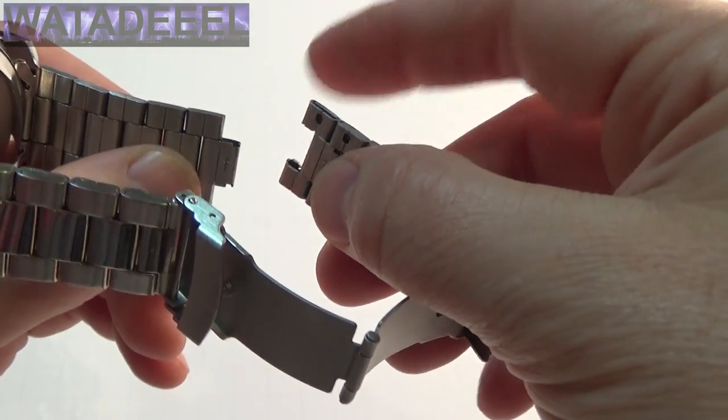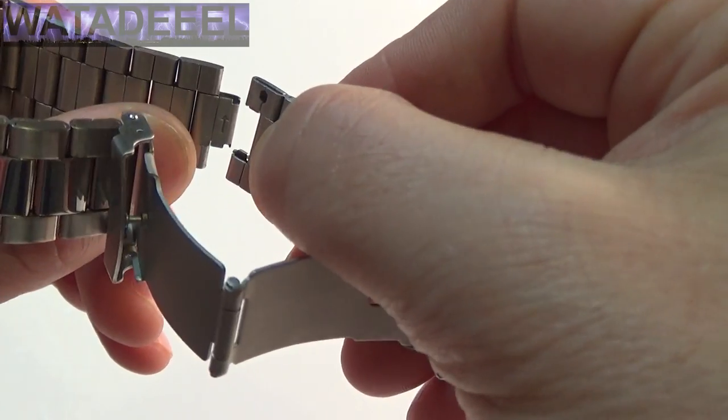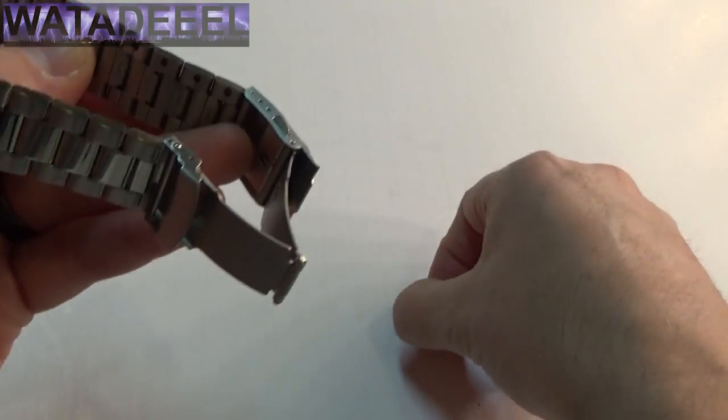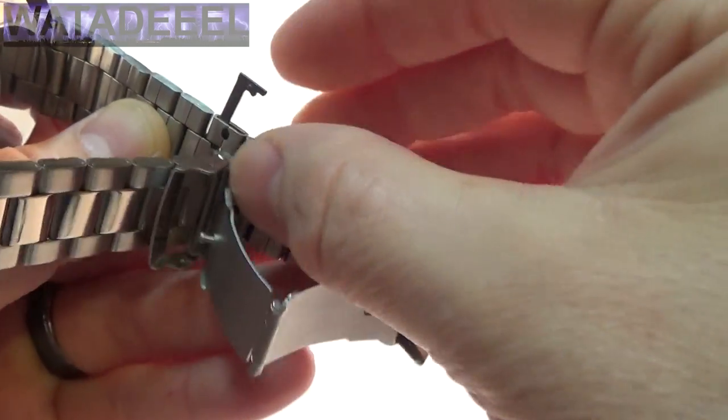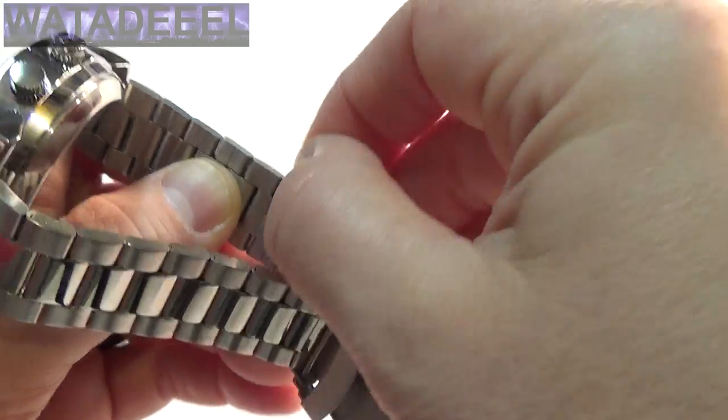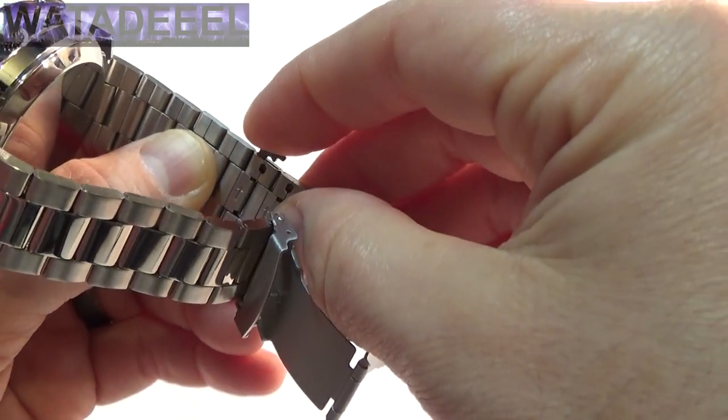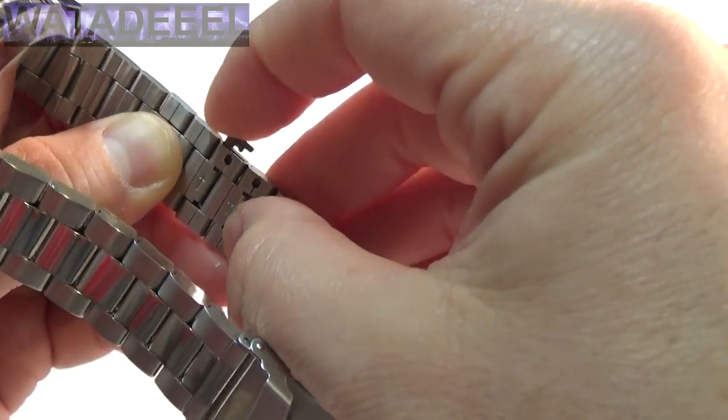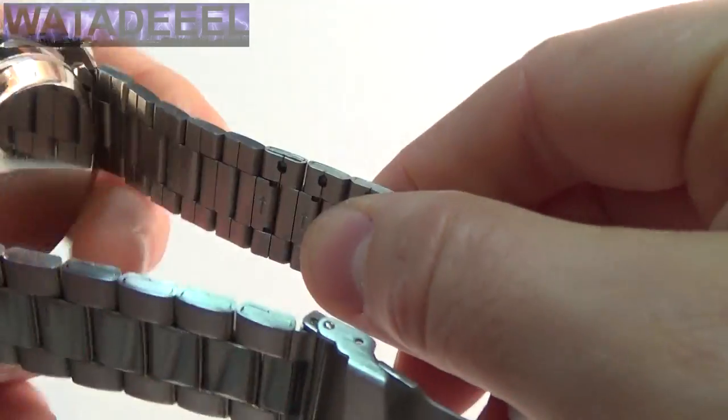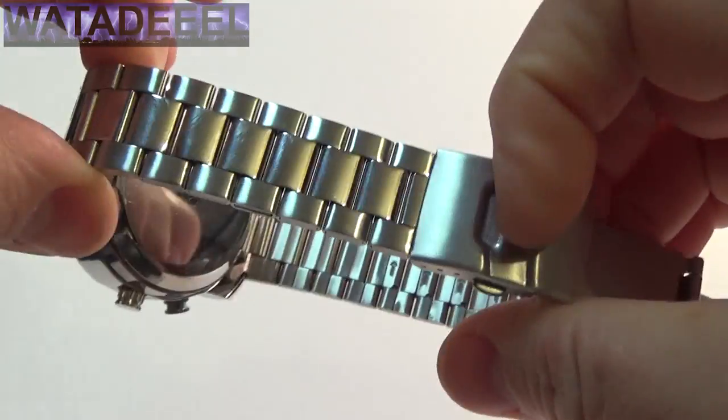So to put it back together, I'll just pretend like I removed a link already. Slide that back in, just like that. You take this pin, put it back where it came from. Make sure you line it upright. Try again to line it upright. There it goes. And then just shove it home. And now you've removed a link and made it shorter.